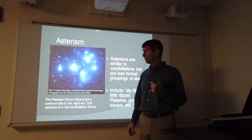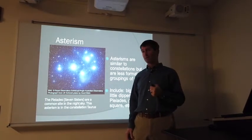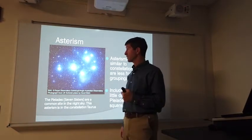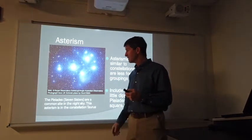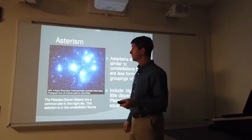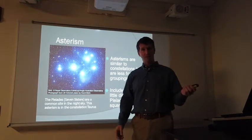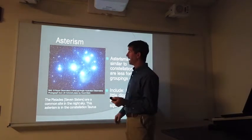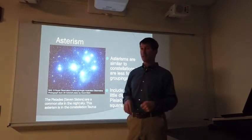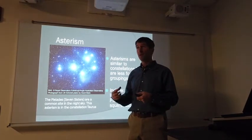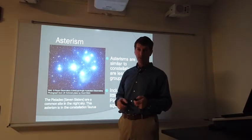There are patterns of stars which are non-official constellations, sort of unofficial patterns of stars, and we call these asterisms. Asterisms include the Pleiades, the Seven Sisters, also known as Subaru by the Japanese. They named the car company after this asterism, obviously. The Big Dipper is not a constellation. The Big Dipper is an asterism within the constellation Ursa Major, the Big Bear.